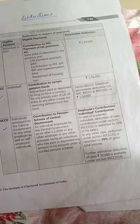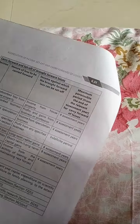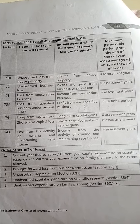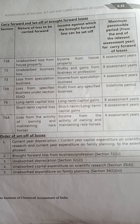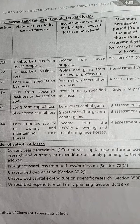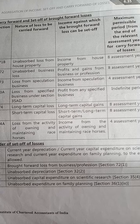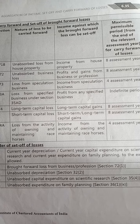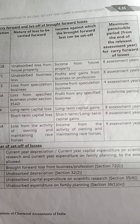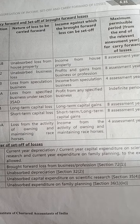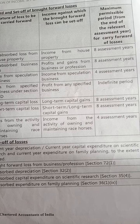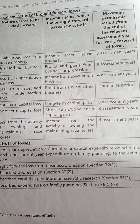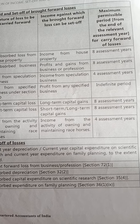Now let us see how to carry forward the loss. Under Section 71B, if there is any unabsorbed loss from house property — meaning in any previous year if there is a loss from house property that could not be fully set off — it will be carried forward to subsequent years. Such unabsorbed loss will be set off against income from house property only, and it can be carried forward for a maximum of eight assessment years.